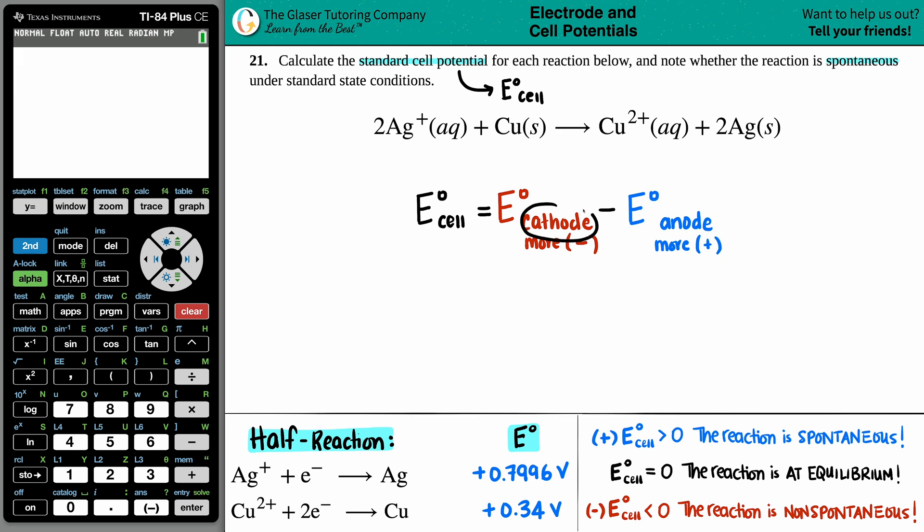Remember red cat, reduction happens at the cathode, and in reduction you're always going to be more negative. Oxidation happens at the anode, and that's always going to become more positive. So we just have to look at these charges. For example, when I look at Ag+...